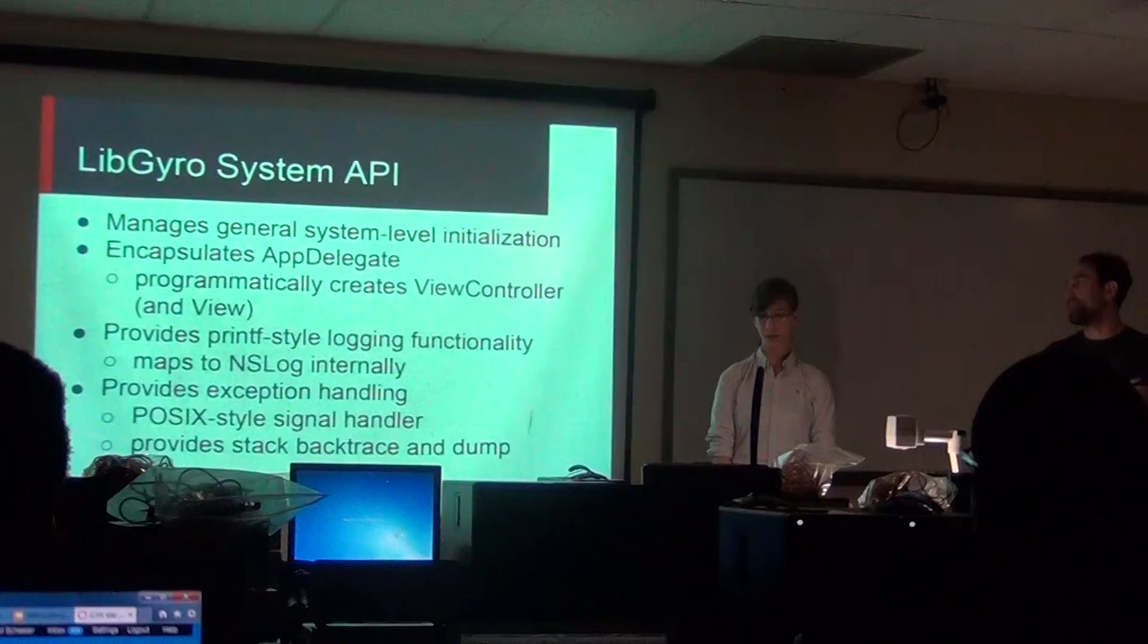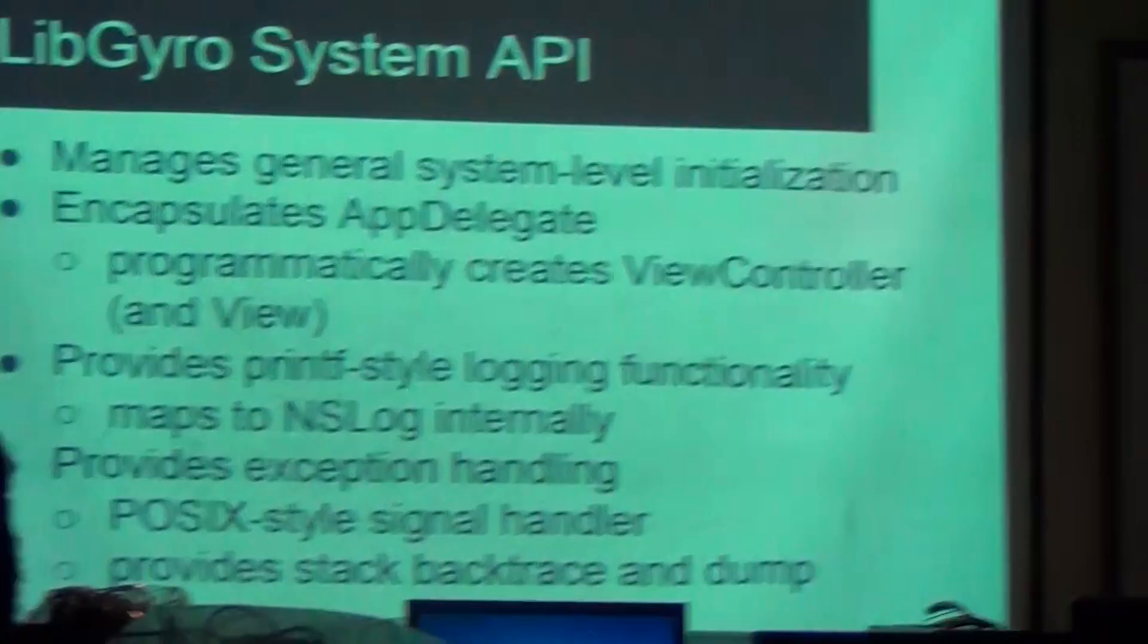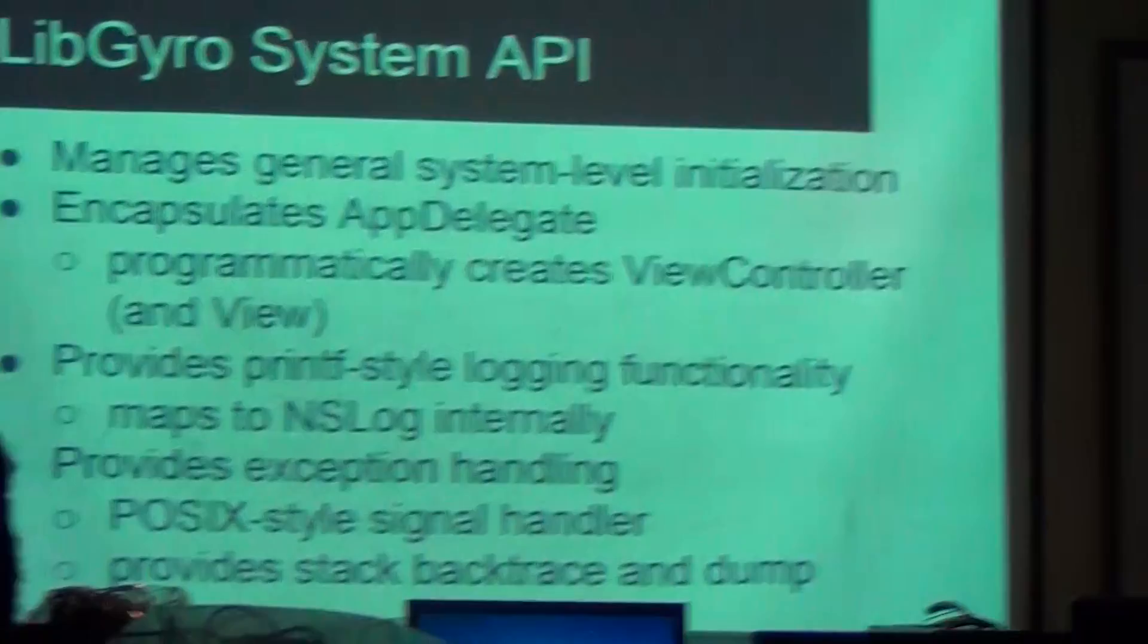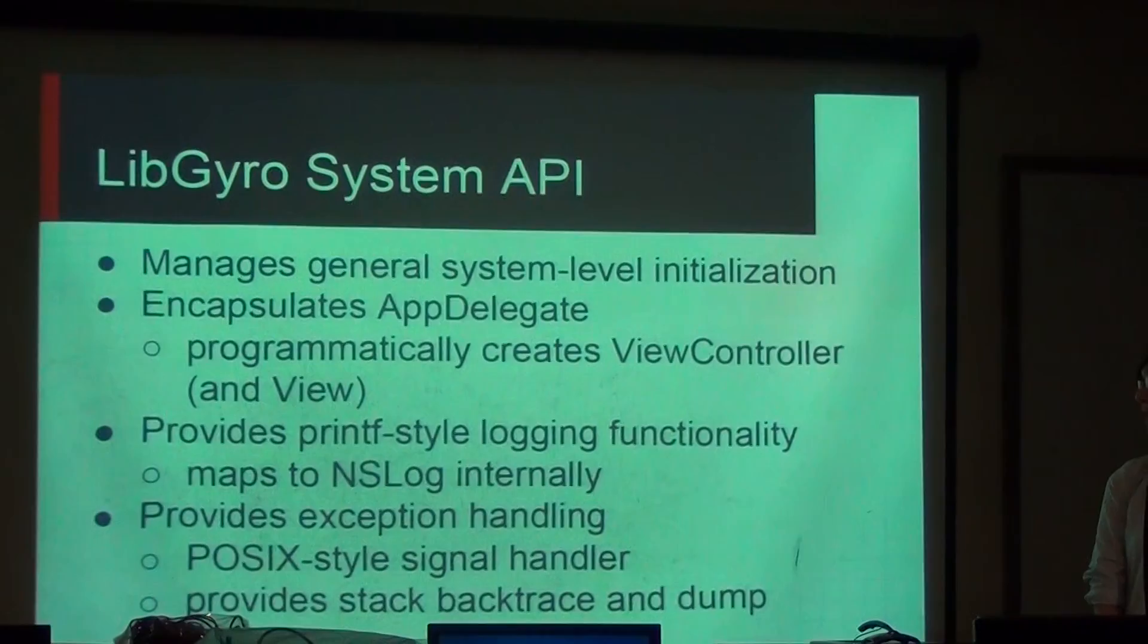The LibGyro system API manages the general system level initialization and encapsulates the app which programmatically creates the main controller and the view. It also provides printf-style logging functionality which maps to the NS log internally. It provides exception handling, the classic style of signal handling, and provides a stack trace.